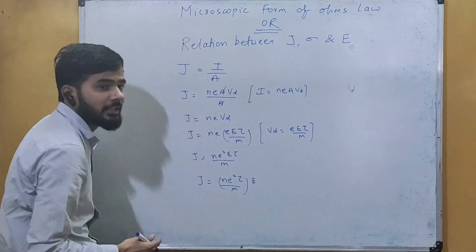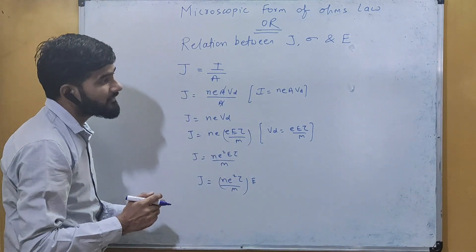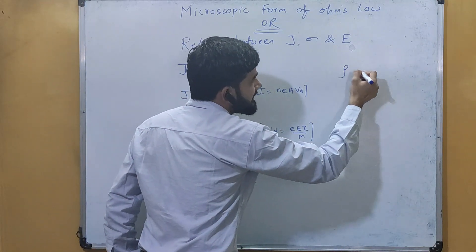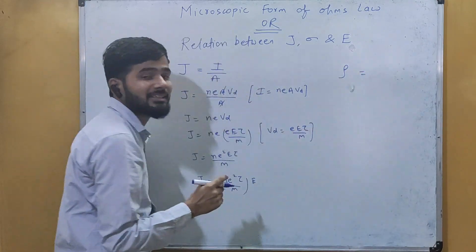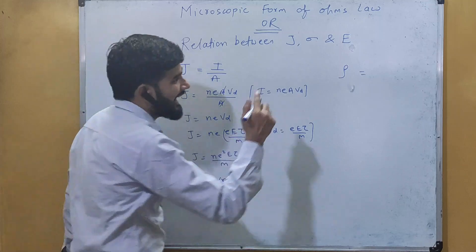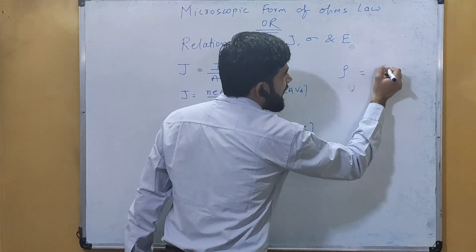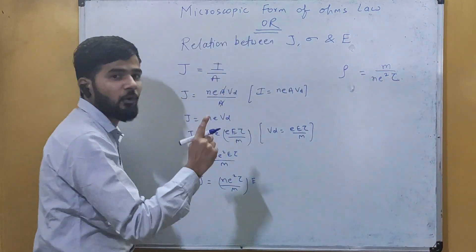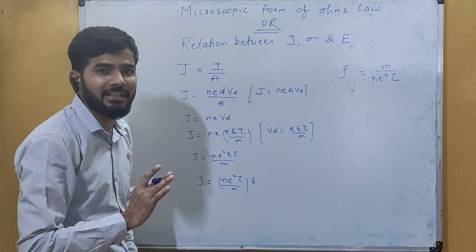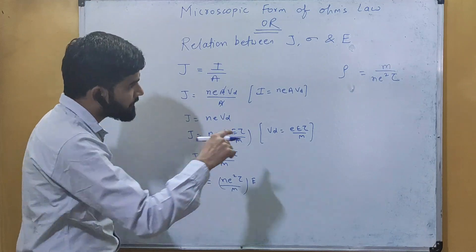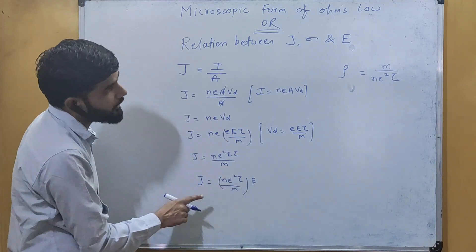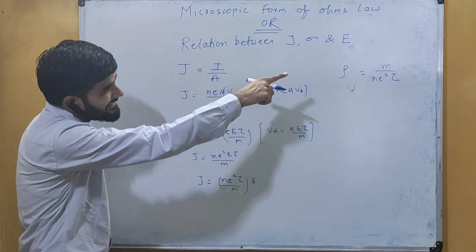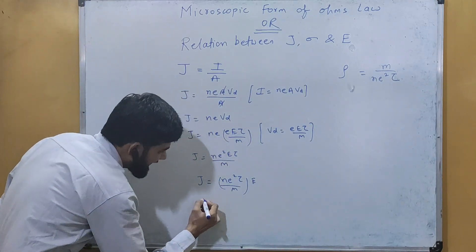Recall that we previously derived the electrical resistivity formula: rho equals m divided by (n·e²·τ). Notice that the term n·e²·τ/m appearing in our expression is exactly the reciprocal of rho.